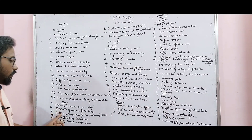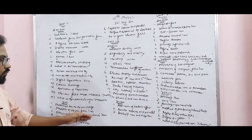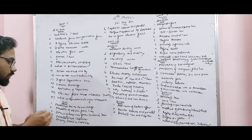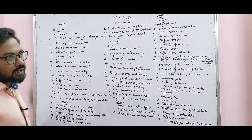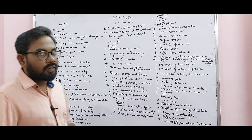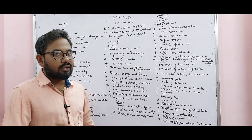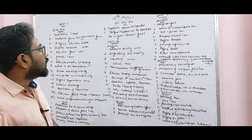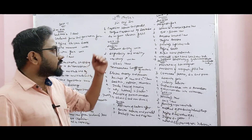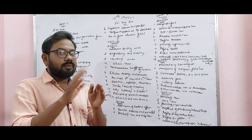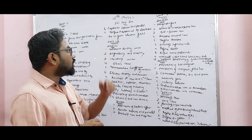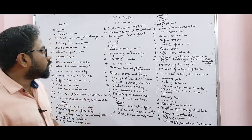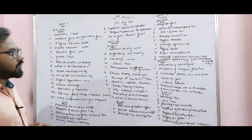Obtain Gauss's law from Coulomb's law, parallel plate capacitor, energy stored in a capacitor — these are 5 mark or 3 mark questions. Capacitors in series and parallel — 5 mark. Torque experienced by a dipole due to a uniform electric field — 3 mark.